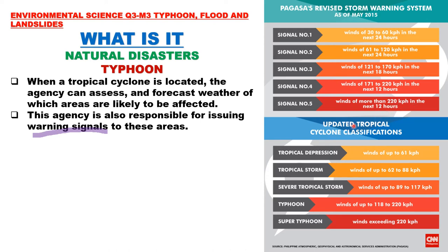The updated tropical cyclone classifications are: tropical depression, tropical storm, severe tropical storm, typhoon, and super typhoon. The wind speed for each classification was mentioned in the previous slide — you may read it later.